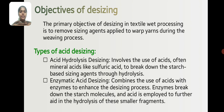Objectives of Desizing. The primary objective of desizing in textile wet processing is to remove the sizing agent applied to the warp yarn during the weaving process.